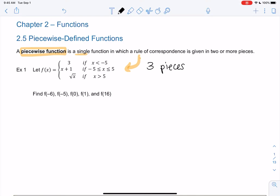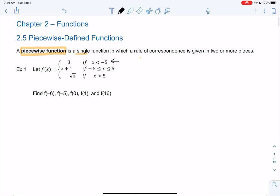Basically the rule tells me when to use what piece. So the first piece, this we're going to use anytime we plug in an x less than negative 5. So negative 6, negative 7, negative 5.1, right? Anything beyond negative 5.